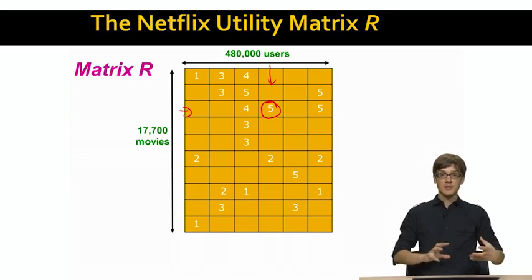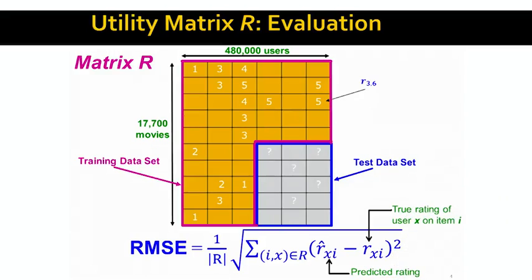Given such a matrix, we want to formulate the recommendation problem. We want to predict how much will a given user like some movie that they will see in the future. We can use the historical rating data to build our model — this is what we will call the training data. Using this trained model, we then want to predict how much users will like movies they haven't yet seen, and we call this the test data.